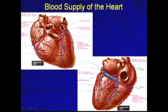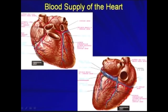Let's look at the blood supply of the heart. Here is the anterior and posterior aspect of the heart. The left main stem coronary artery gives rise to the left anterior descending artery, supplying the anterior aspect of the left ventricle. The other branch is the left circumflex artery, running in the left atrioventricular groove. On the right side, the right coronary artery runs in the right AV groove and continues in the posterior atrioventricular groove, giving rise to the posterior descending artery, which supplies the posterior aspect of the heart running in the posterior interventricular groove.